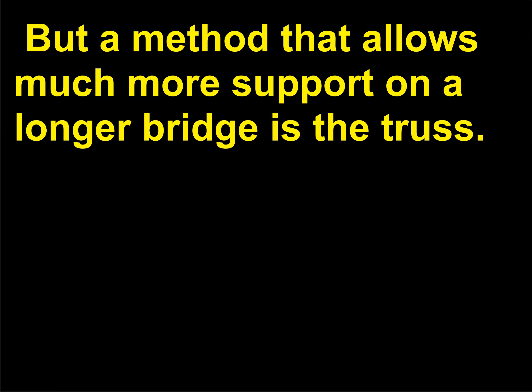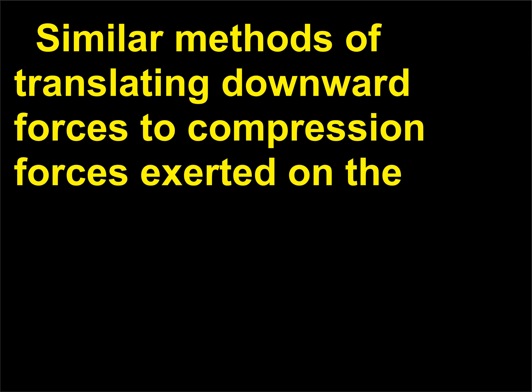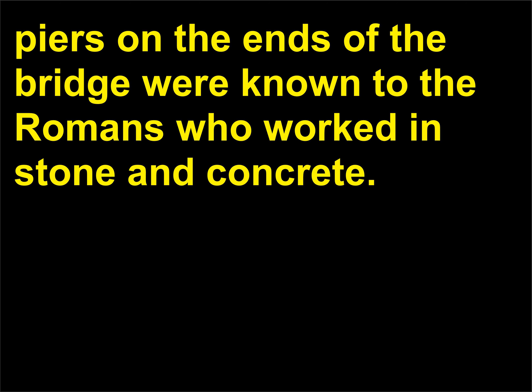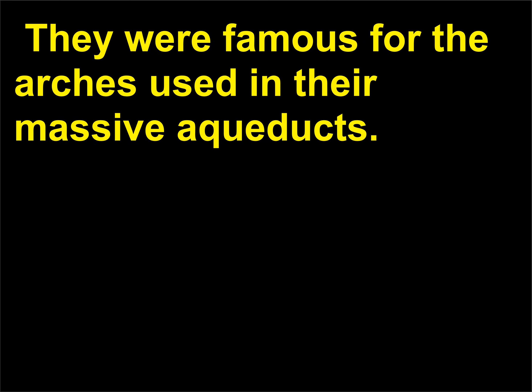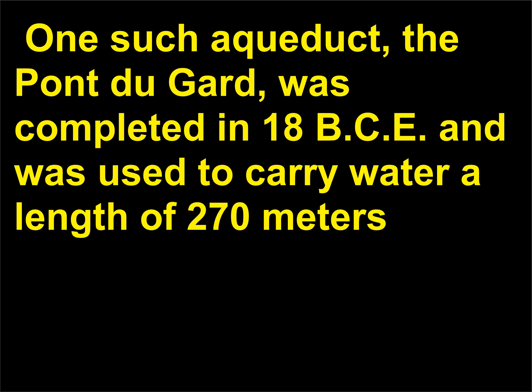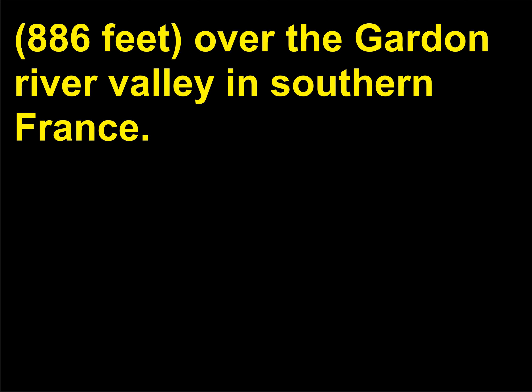A method that allows much more support on a longer bridge is the truss. Similar methods of translating downward forces to compression forces exerted on the sides of the bridge were known to the Romans, who worked in stone and concrete and were famous for arches used in their massive aqueducts. One such aqueduct, the Pont du Gard, was completed in 18 BCE and was used to carry water a length of 270 meters (886 feet) over the Gard River valley in southern France.